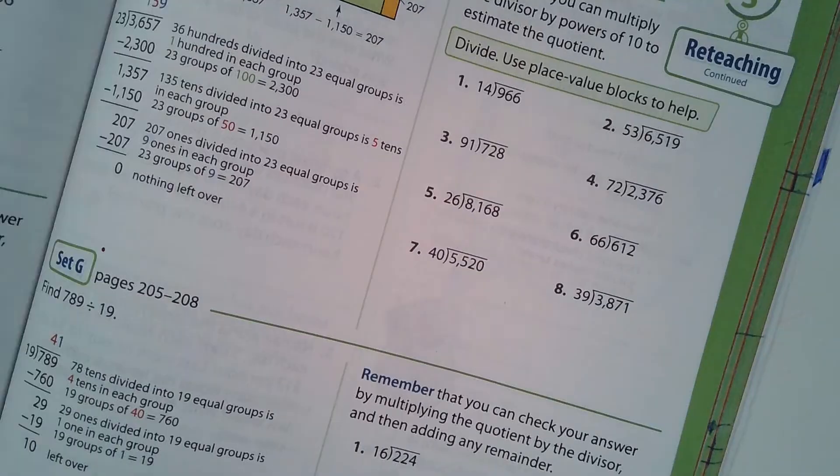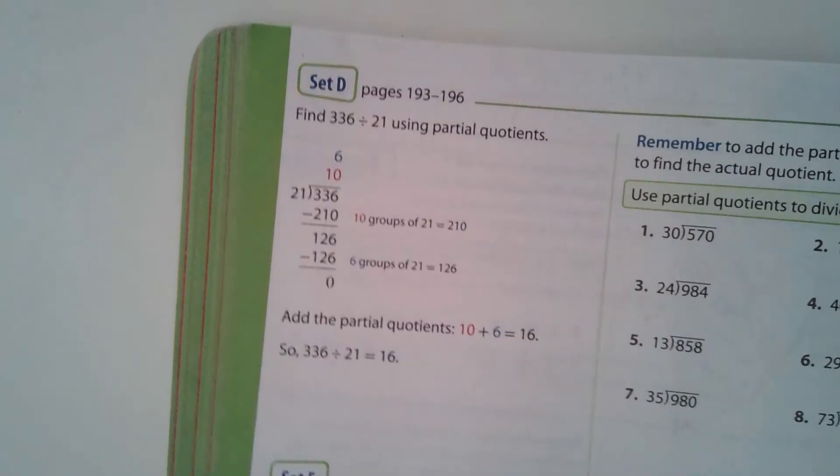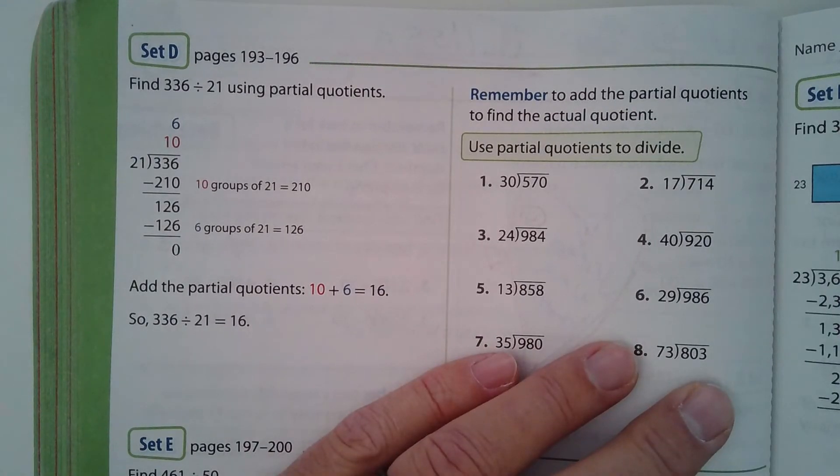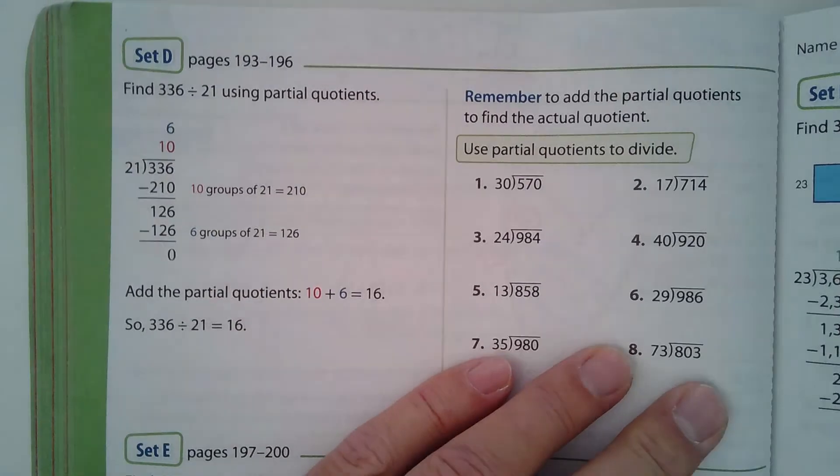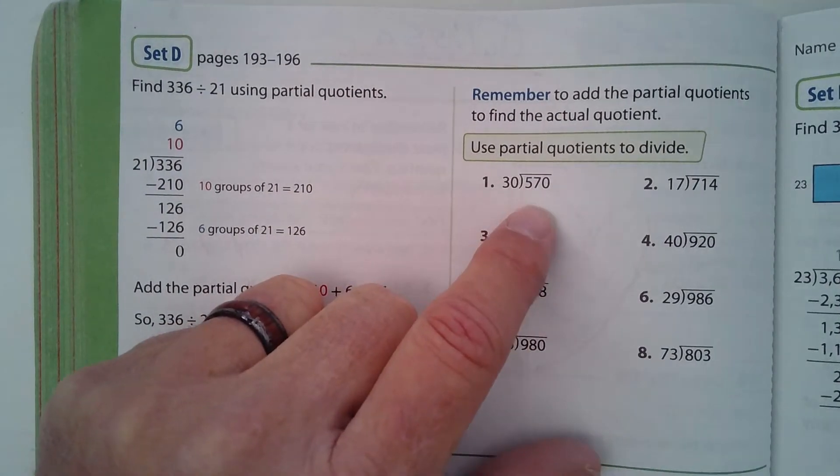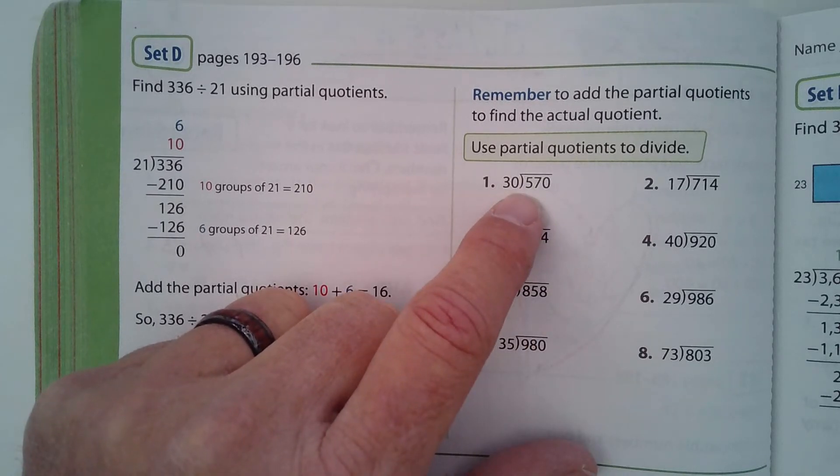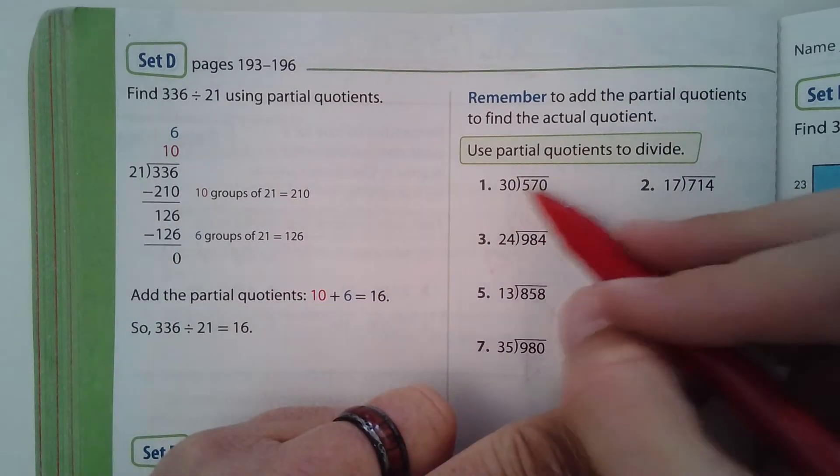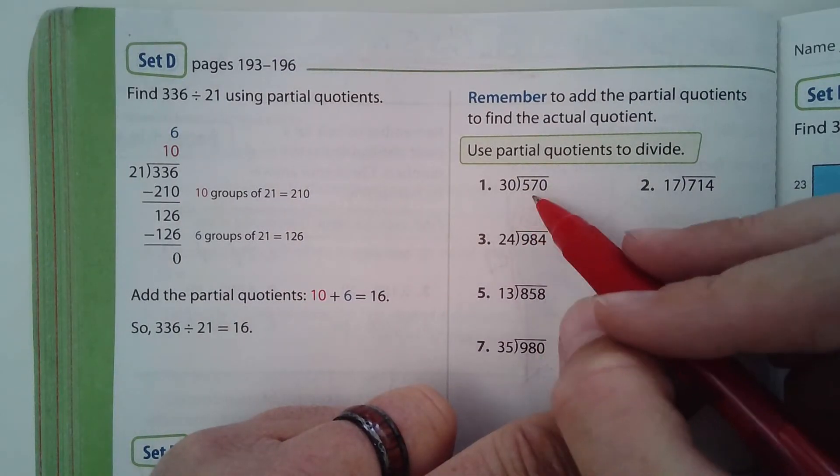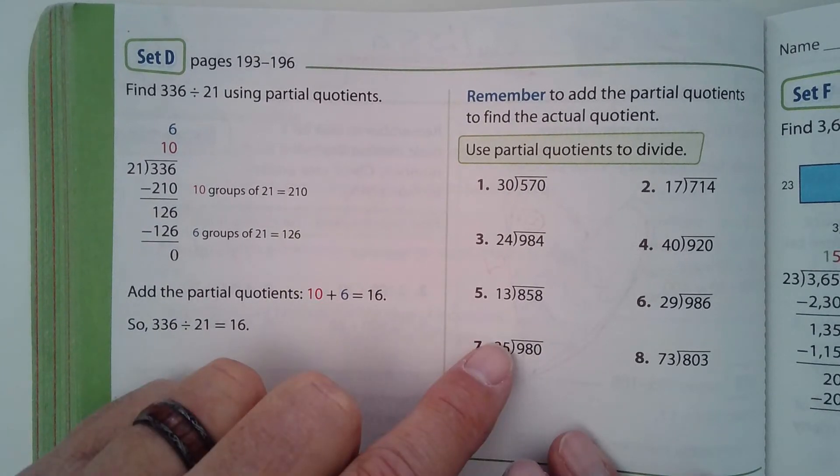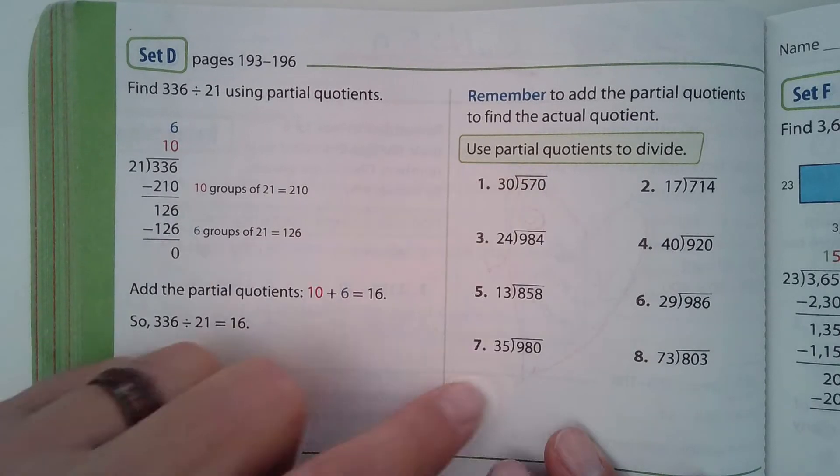Next page. We're looking at set D now. Go ahead and you can just divide these. I mean, you could cross out the zeros and figure out how many times three goes into 57. It wouldn't be too hard. But some of these you could at least partially do mentally. But go ahead and do set D.